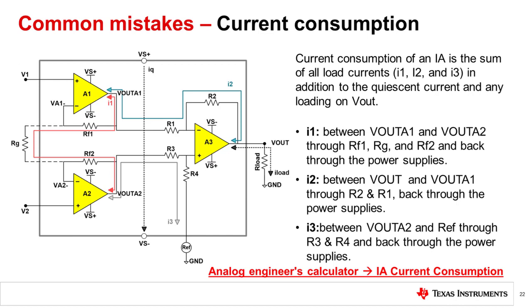A common mistake is understanding the current consumption of an IA. In many instances, a user will set up a 3-amp IA and rely on the quiescent current specification of the datasheet to determine the current consumption of the circuit. However, this is not the case. The total current consumption of the IA is the sum of all load currents in addition to the quiescent current and any loading on Vout through I load.